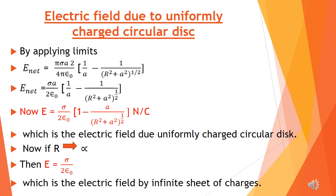Now we can also find the electric field for an infinite sheet. This circular disk becomes infinite when its radius R approaches infinity. Then the denominator approaches infinity, and a/∞ equals zero. So the net electric field that remains is E = σ/(2ε₀), which is equal to the electric field due to an infinite sheet of charges that we derived previously. This is independent of the distance 'a' — there is no term involving distance in this expression.